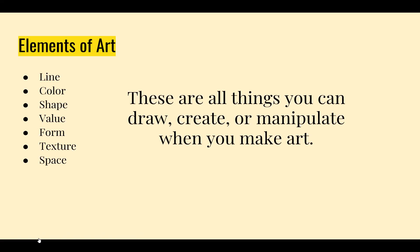Texture and space are also pretty basic. Texture is real or invented — either it's something you can actually touch and feel, which often goes hand-in-hand with form if you're talking about a sculpture, or an invented texture is one that is an illusion. It might be a texture drawn into a painting, but when you touch it, it's actually just smooth. Space is how you arrange your work and whether you have objects in certain areas and how you're using your entire canvas or paper.